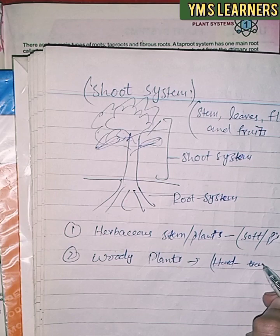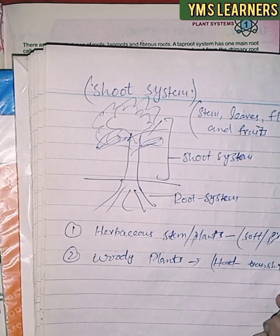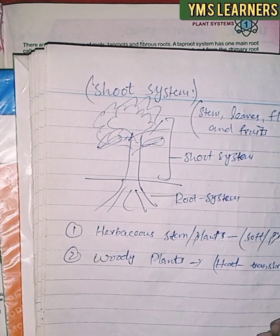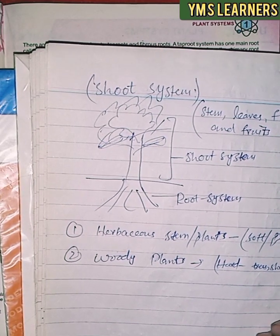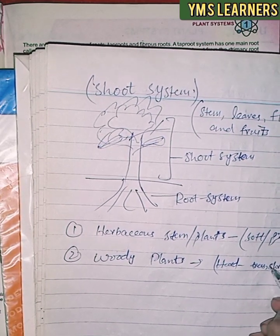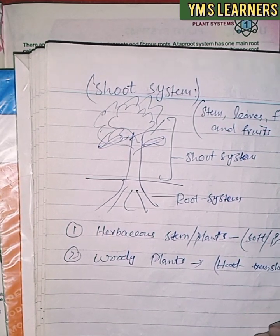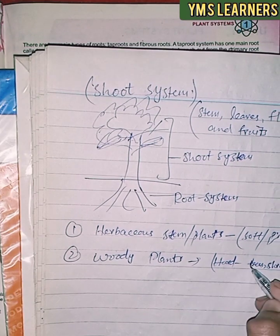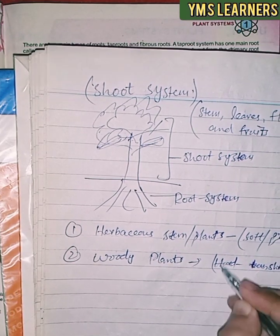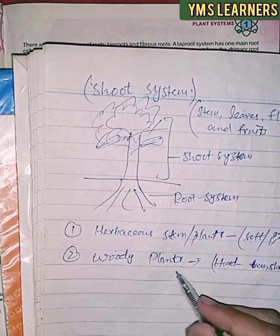Examples of woody plants include trees, shrubs, and so on. This is a picture from the last video showing examples of woody plants.